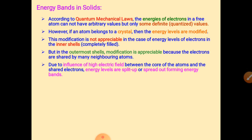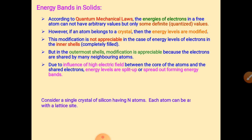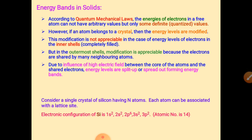For example, consider a semiconductor atom — silicon — having n atoms, where each atom is associated with a lattice site. Silicon has atomic number 14, so its electronic configuration is 1s2 2s2 2p6 3s2 3p2.